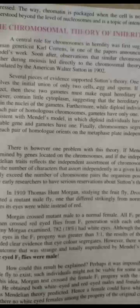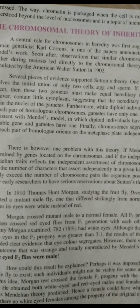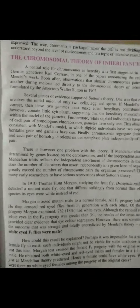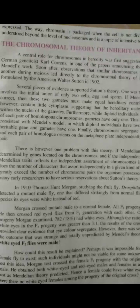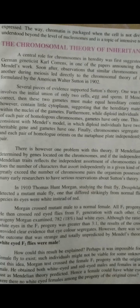Koi bhi scientist hota hai, woh ek theory propose kar deta hai, phir us par bahut se log kaam karte hain, objections bhi aati hain, phir us theory ko formulate karne wale scientist ko apni theory ko prove karna hota hai. Sutton ki theory ko theek sabit karne ke liye yahan par different pieces of evidence milte hain. Har paragraph mein aapko evidence milta jaega jo show karega ke these chromosomes are responsible for the inheritance and transfer of characters from offspring to parent generation.